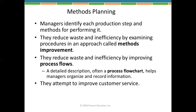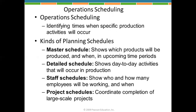In methods planning, managers identify each production step and methods for performing it. We focus on reducing waste and improving production capacity. If this is not done properly, it creates problems. We use flow charts to map out the process. Finally, we move into operation scheduling, which we will continue to discuss.